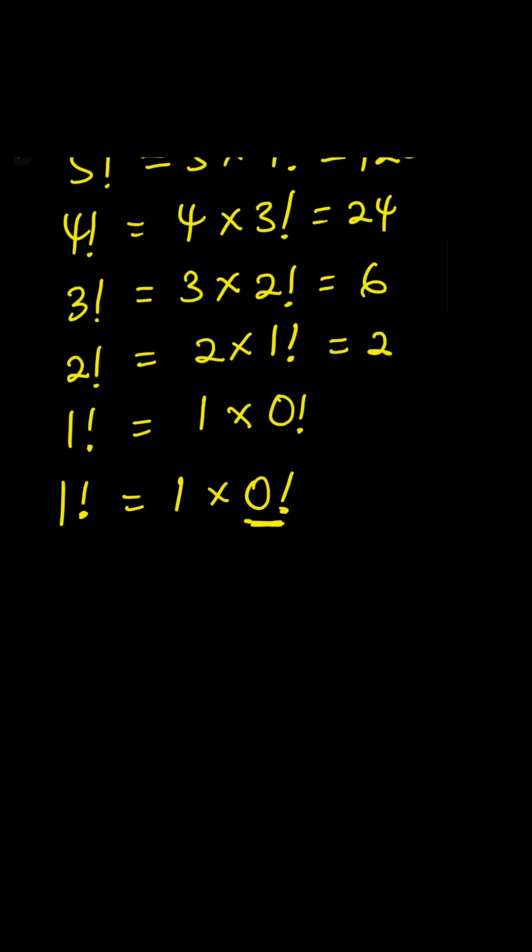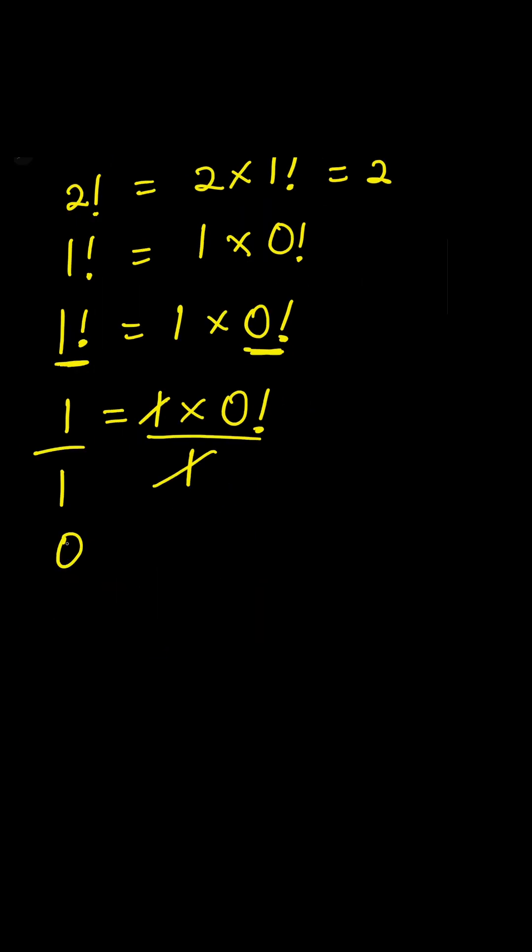So we can simplify this. But we know one factorial is equal to one, right? So we have one equals one times zero factorial. So to find the value of zero factorial, we can divide both sides by one.